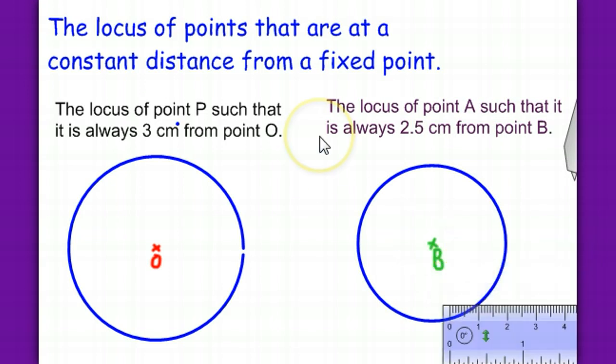So, please remember that if it is from a fixed point, from one point, your locus is a circle. And how big is that circle is mentioned in the question.